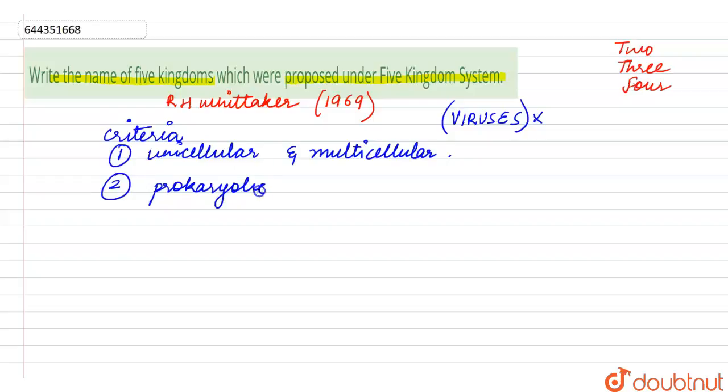The third one is the mode of nutrition. Mode of nutrition could vary from phototrophism to the heterotrophic mode of nutrition.